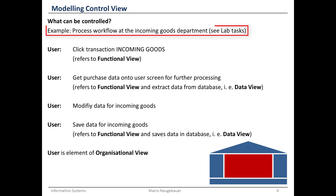Let's look at an example. You purchased some goods which you need for your production process. There is a department or a process step in your production process called incoming goods, where goods are received and you have to check them and register what was received.